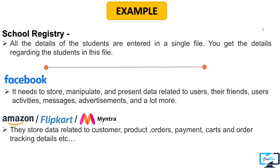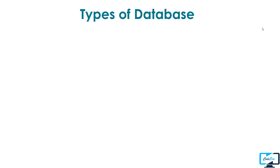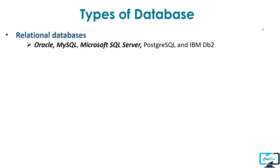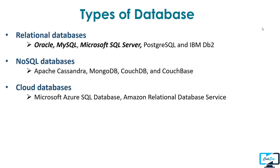Database is present everywhere, and there are many types of database management systems available. We can use different systems according to our requirements. The first and most common type is the relational database, which can be created using Oracle, MySQL, or Microsoft SQL Server. This is the most frequently asked type in interviews, especially for freshers. Other types include NoSQL database, Cloud database, Document database, Wide Column database, Object Oriented database, and many more.